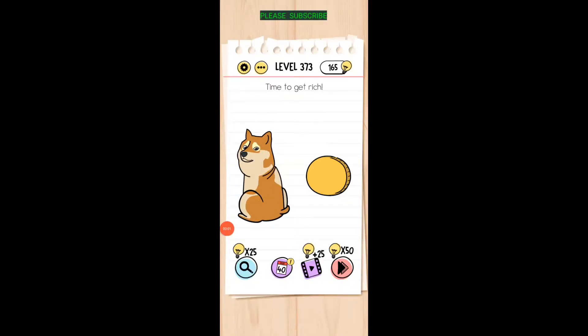Time to get rich. Dogecoin, so just turn the dog around and drag the coin over to her.